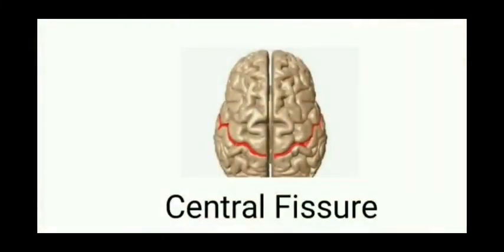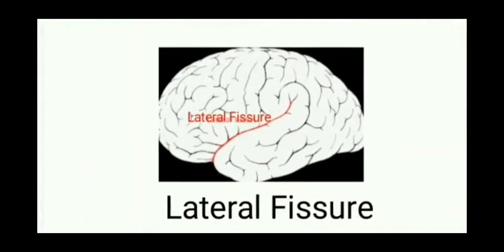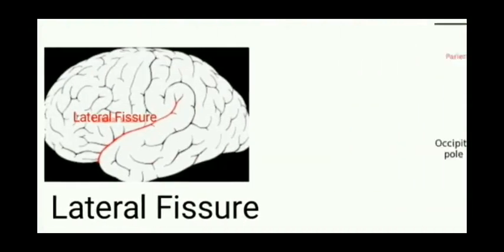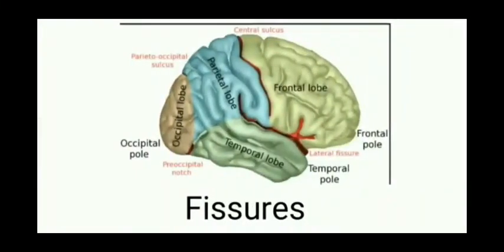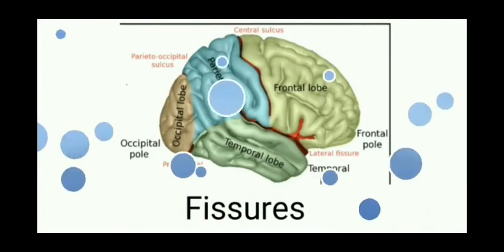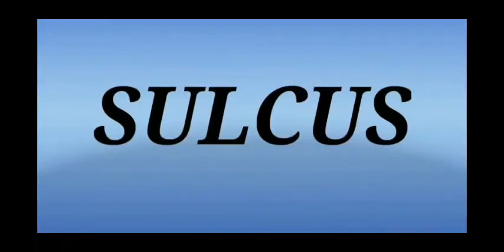Next, we call the Central Fissure. This is the name of the lobes. The lobes are defined by the two fissures. There are third variants of sulci. We will talk about the third variants.